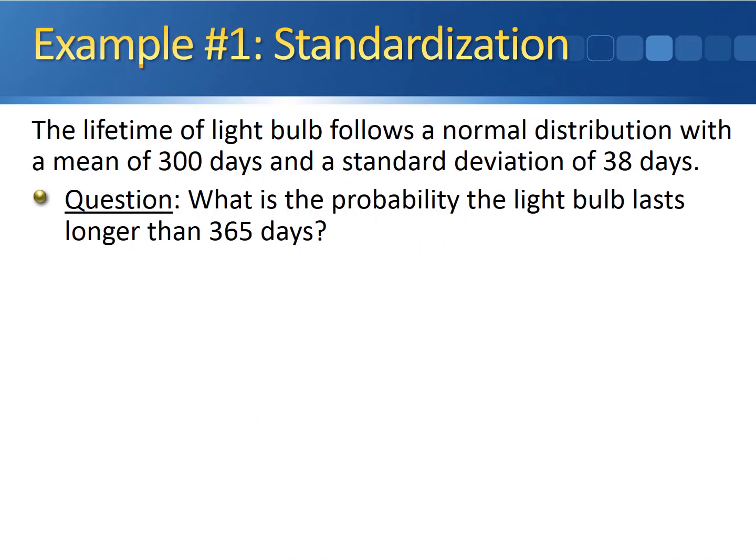Let's take a look at one example that uses standardization directly. The lifetime of a light bulb follows a normal distribution with a mean of 300 days and a standard deviation of 38 days. What is the probability the light bulb lasts longer than 365 days?